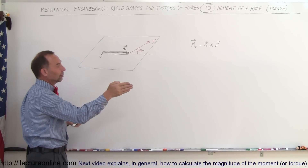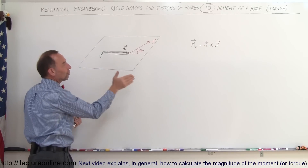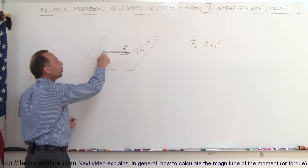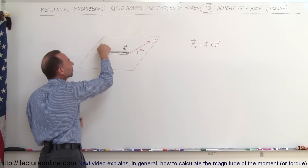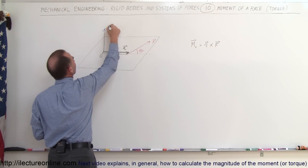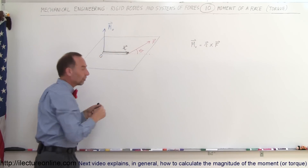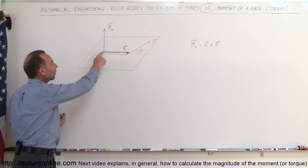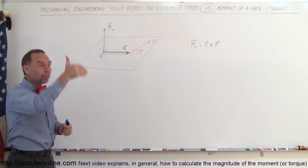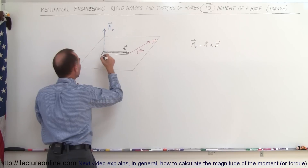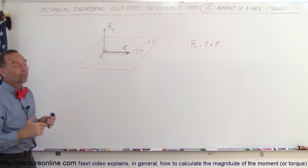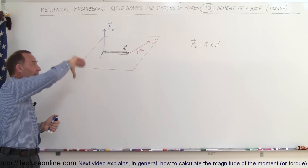Point your fingers in the direction of the R vector, the position vector. Curl your fingers in the direction of the force vector, which is on the same plane as the object. Your thumb will then point perpendicular away from both the R vector and the F vector — perpendicular away from the plane. So here we have what we call the moment about point O. It's the moment about this rotation or pivot point, which is the origin. Notice it is upward away from the plane, perpendicular to both R and F.